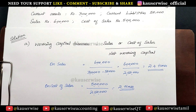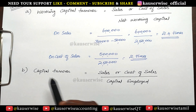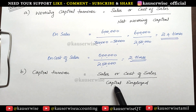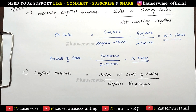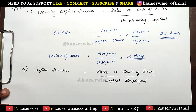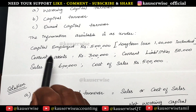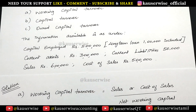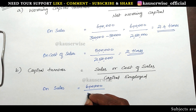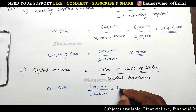Now we are going to find out the second one: capital turnover ratio. The formula is sales or cost of sales divided by capital employed. Capital employed is also given in the problem. Capital turnover ratio on sales: 6 lakh sales divided by capital employed 5 lakh equals 1.2 times.